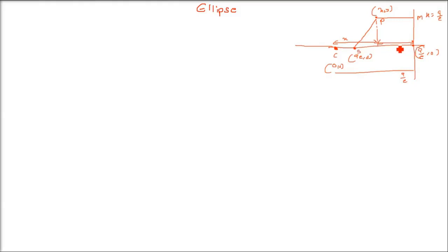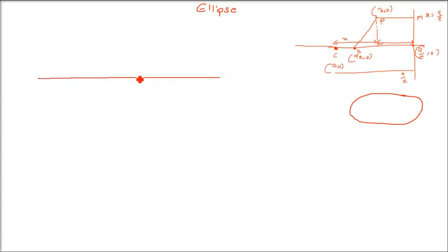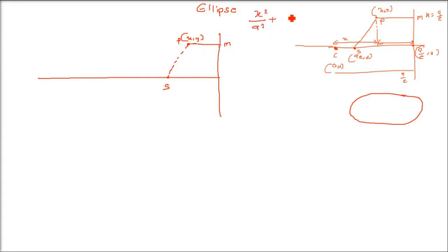We proved the equation using one focus and one directrix. Now we go a step further to show that an ellipse has two foci and two directrices. We recall our construction: focus S, directrix line perpendicular to SK, a moving point P at (x,y) with PM as the perpendicular from P to the directrix. The ratio PS/PM = e gave us the equation, and b² = a²(1-e²).